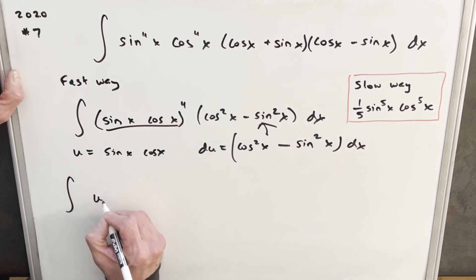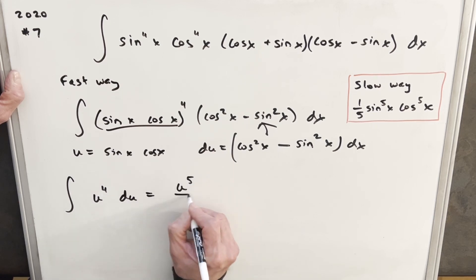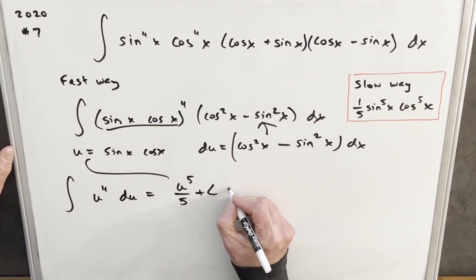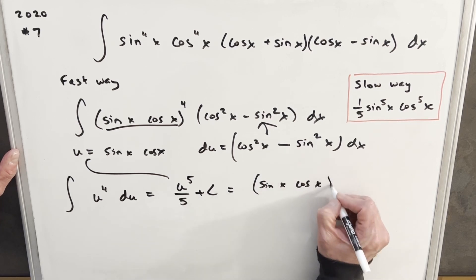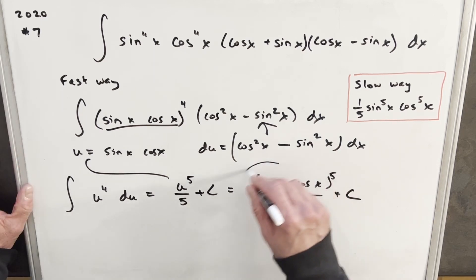So making this substitution, we're just going to have u to the fourth du. Just using the power rule, we have u to the five over five plus c. Our final solution will have sine x cos x to the fifth over five plus c. And that's it.